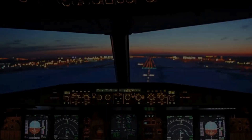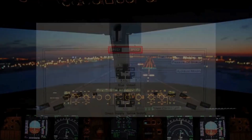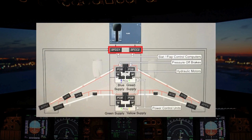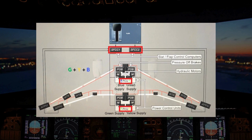To recap, the A320's flap and slat systems are controlled by the dual-channel SFCCs, which interpret pilot inputs and command the respective power control units for both the flaps and slats. These surfaces are powered by all three hydraulic systems, with real-time position feedback provided by the IPPUs and transmitted to the ECAM. Protection mechanisms, such as the wingtip brakes and the flap attachment failure detection sensors, ensure the system remains secure and operational, even during malfunctions.